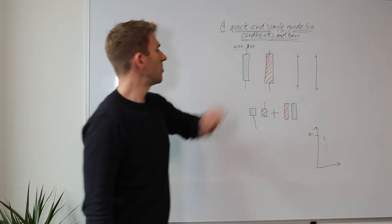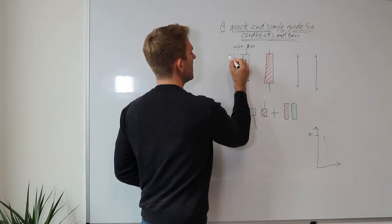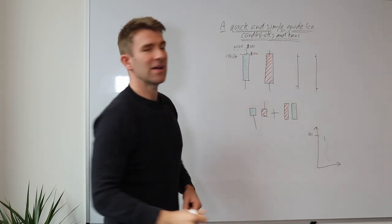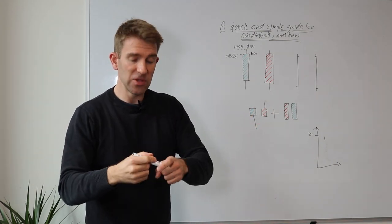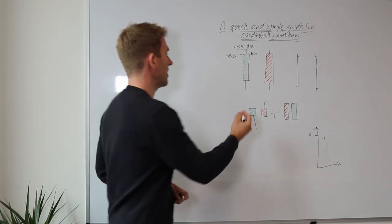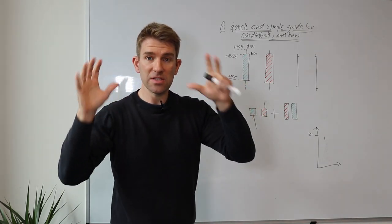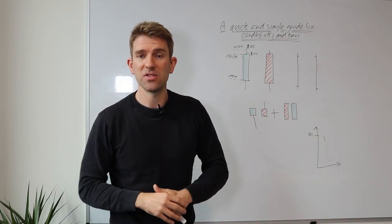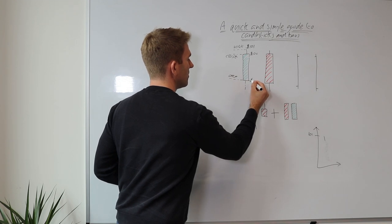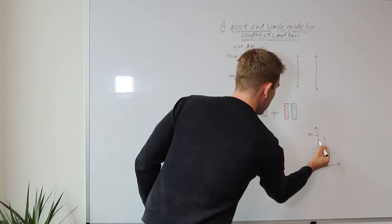The body of the candlestick is dependent on the open and close. When we have a green candlestick, the close is higher than the open. The close — let's say $100 — is where the price ended, for example at 4 p.m. when the US markets close. The open, where trading begins at 9:30 a.m., might be $95 in this example.